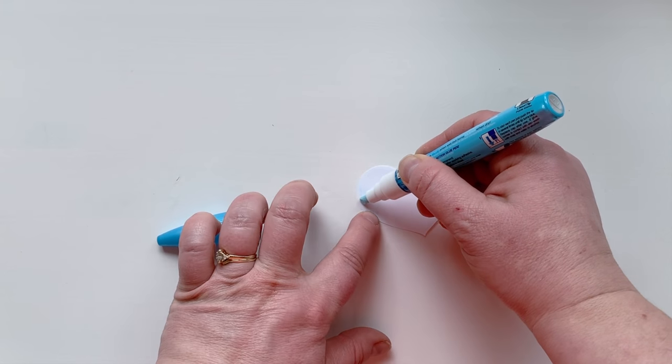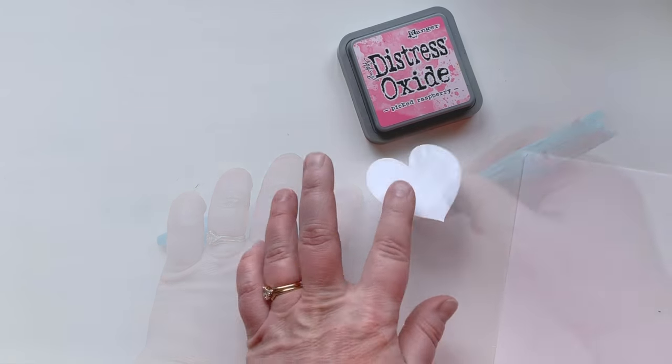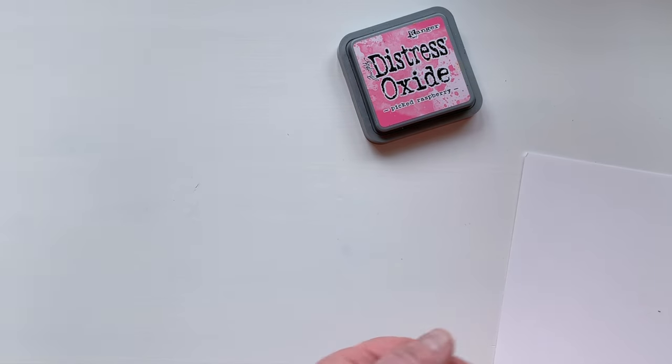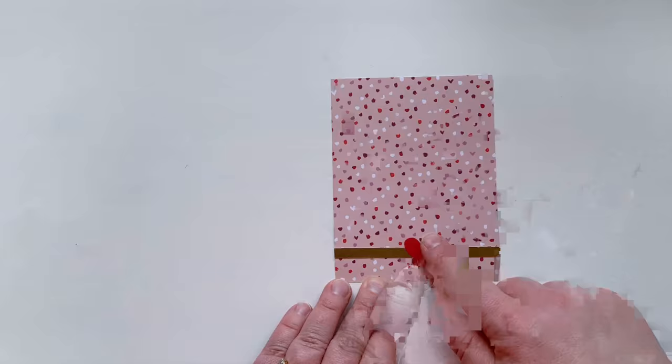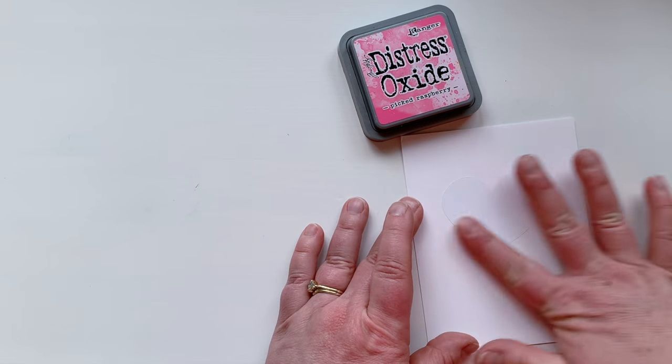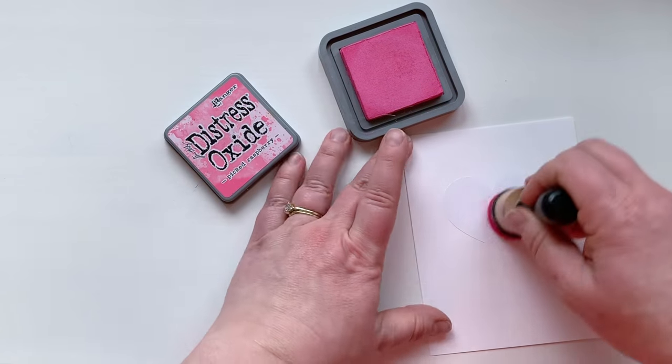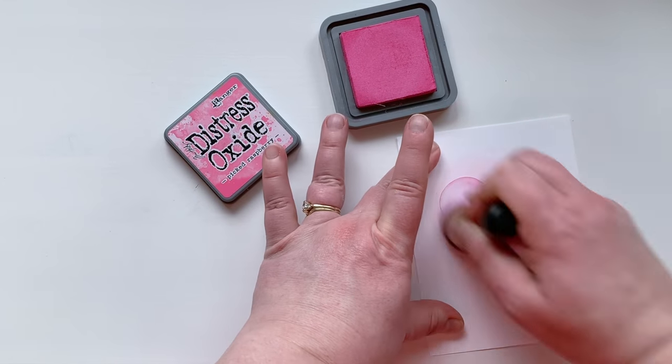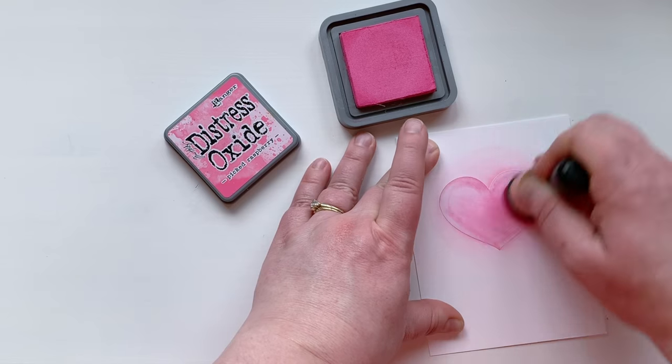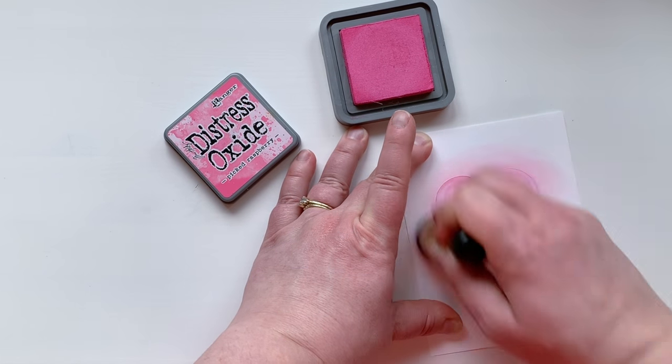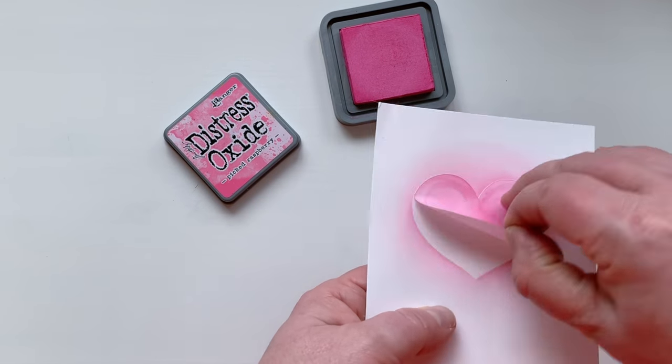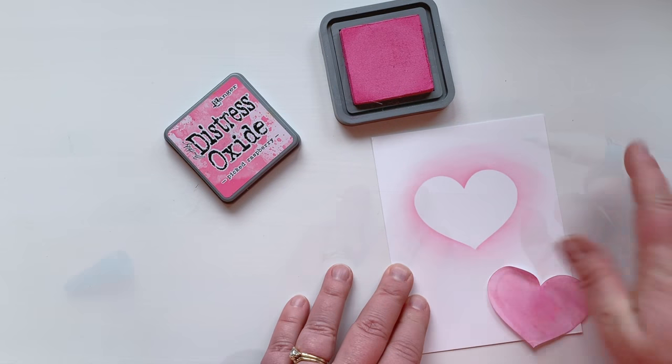You can create your own masks as I've done here with a die and some copy paper. After about a minute that glue is dry and I can stick my mask down onto my paper and apply my ink right over the top. When I'm all done I can easily remove my mask and there will be no sticky residue left behind.